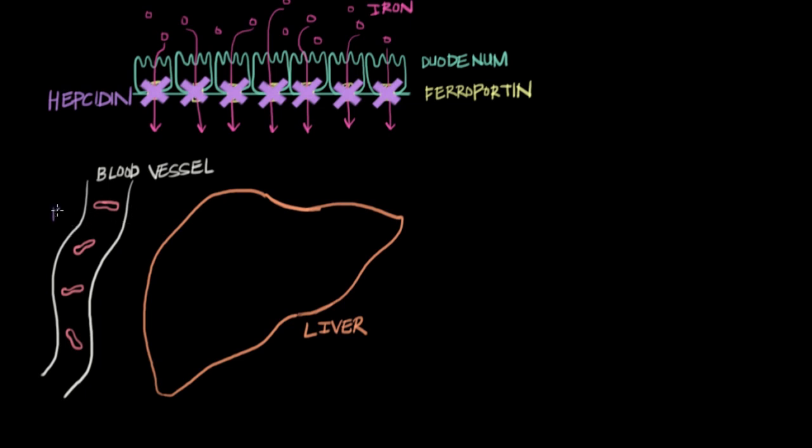Every 120 days or so, each red blood cell is taken out of commission and degraded by cells in the liver called macrophages. Inside the red blood cells, we have lots of hemoglobin, and hemoglobin has iron in its center.